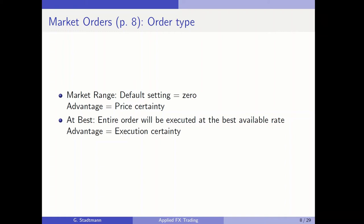There are two different kinds of market orders. At market range is the default setting, and its advantage is price certainty — the price will not be very far from the current market rate. When you press at best, the entire order is executed at the best available rate, giving execution certainty so the order is filled immediately. With at market range, it might take up to 30 seconds for the order to be executed.